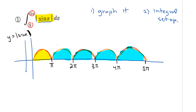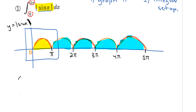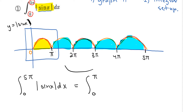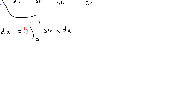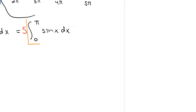This part of the graph is going from 0 to π. So if I want to find the integral from 0 to 5π of the absolute value of sine x dx, this is the same thing as the integral from 0 to π of sine x dx, and then I multiply this whole integral by 5. That gives me the entire area from 0 to 5π.